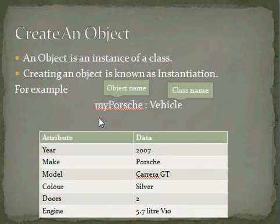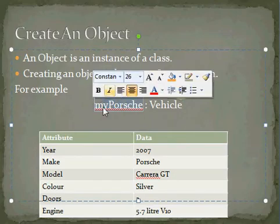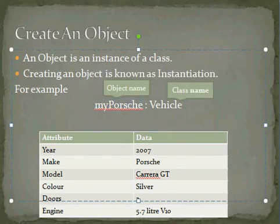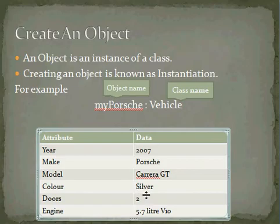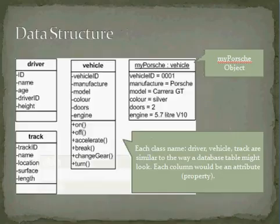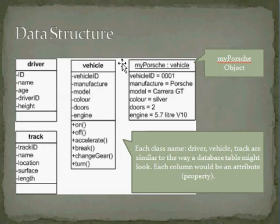In order to create an object, we have to instantiate. If I want to create my own version of a vehicle, I name it — first the object name, then the class name where it came from, which is the vehicle class, and the attributes. So this Porsche is 2007, it's silver, and it's got two doors. The way that data is stored as an object is also a way that you would approach a database structure.